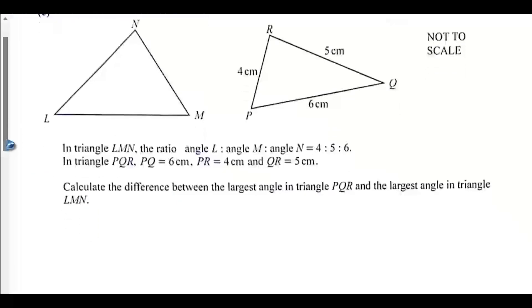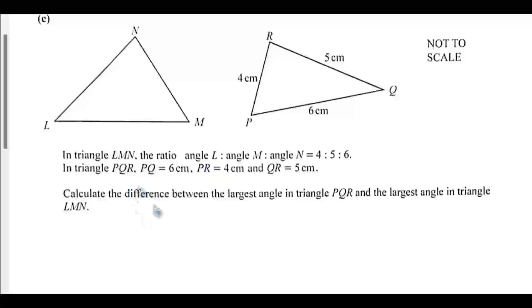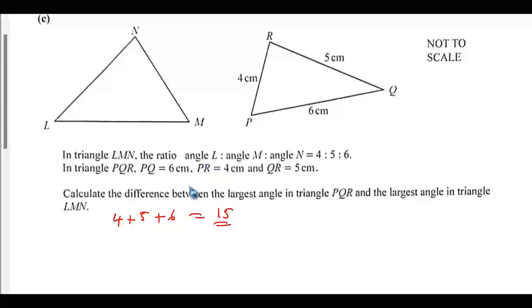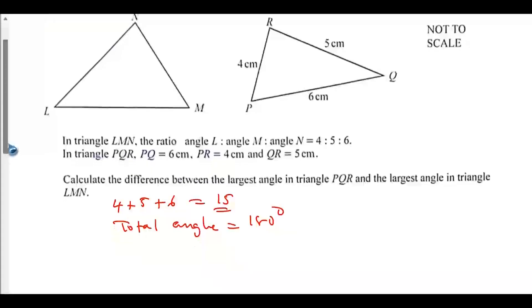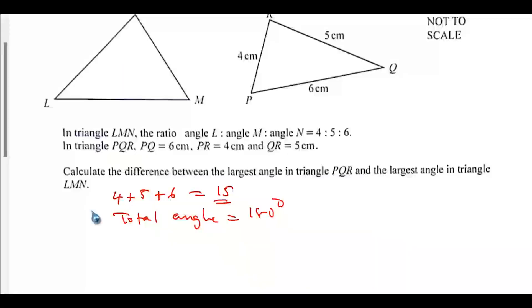So let's start with triangle LMN. The total ratio will be 4 + 5 + 6, that will be 15. And we know that the sum of angles in a triangle is 180 degrees, so the total angle equals 180 degrees. We can easily get the value of the largest angle in triangle LMN, which is angle N because it has the largest ratio.